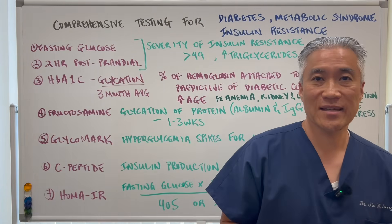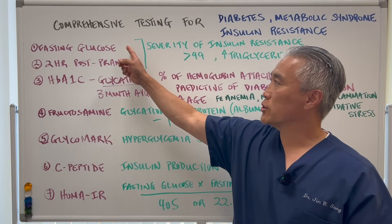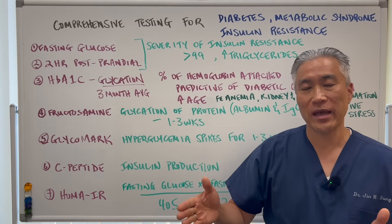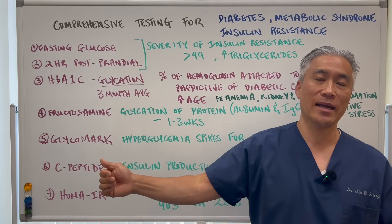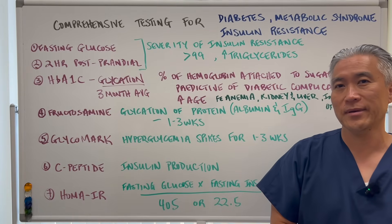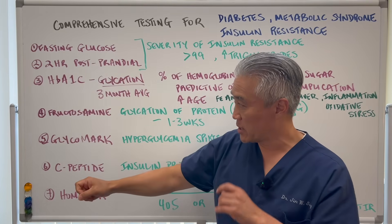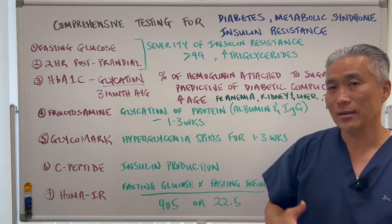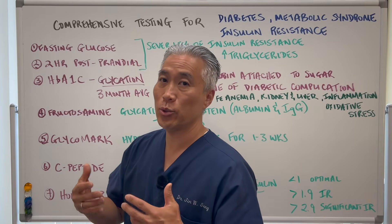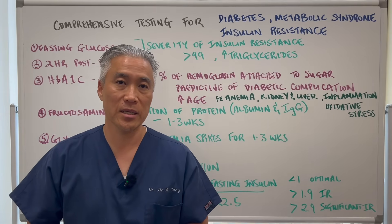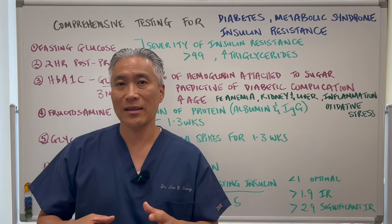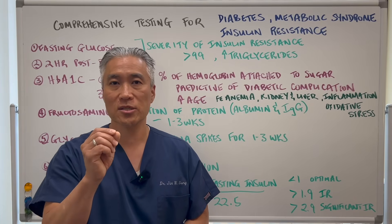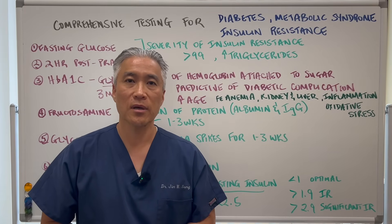You use combinations of these tests to determine if someone has a problem, because patients can sometimes cheat a fasting glucose test by fasting 14 to 16 hours, making it look normal. But if you run hemoglobin A1c, fructosamine, or HOMA-IR, you'll pick up those individuals who have insulin resistance. That, in a nutshell, is all the tests used to determine insulin resistance, prediabetes, or metabolic syndrome. I have another video on markers for autoimmune diabetes linked above. I'm Dr. Jin Sung — we'll see you next week on the healthy side.